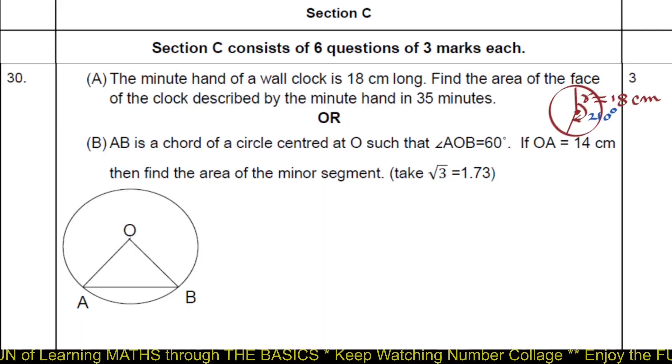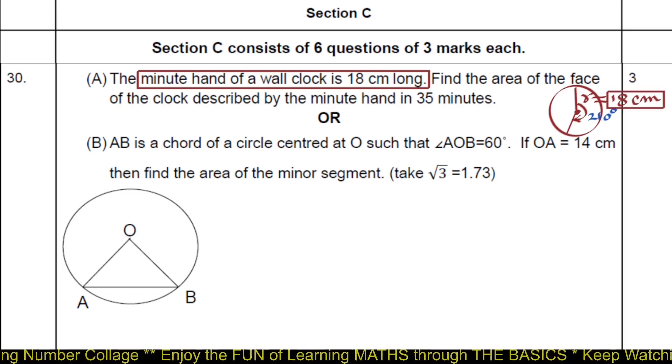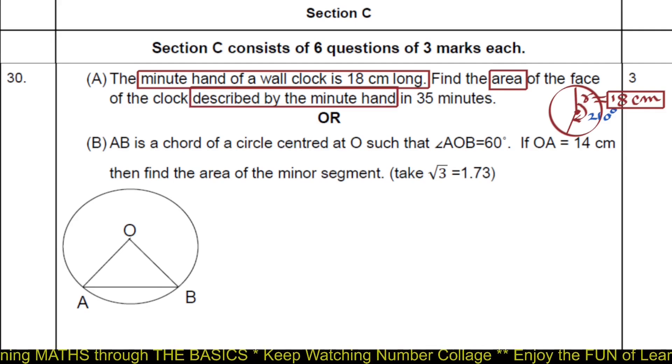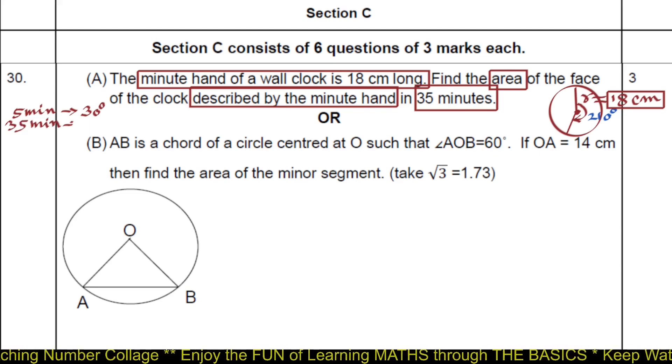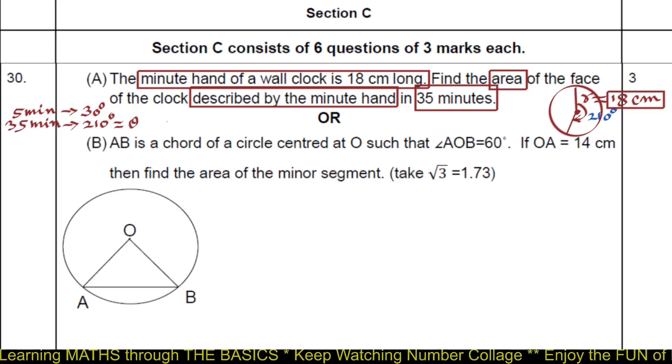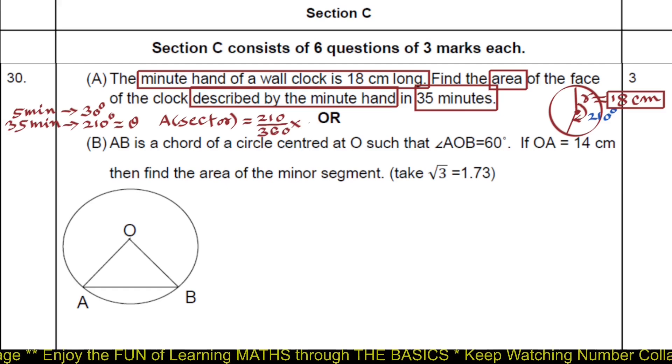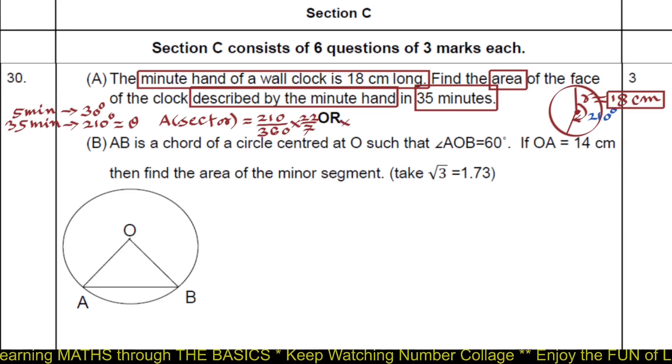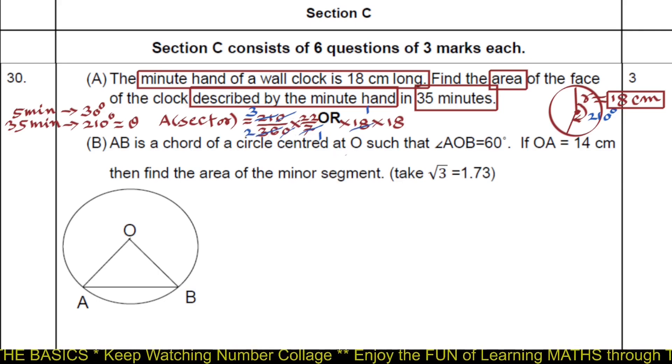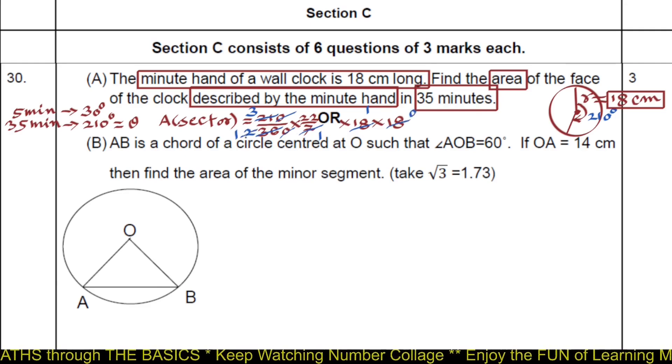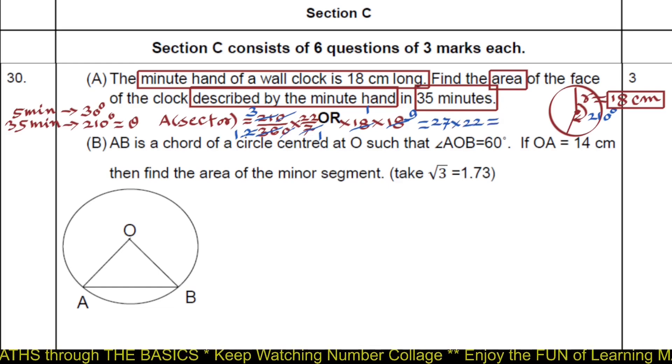Minute hand of a wall clock is 18 centimeter long, which means radius of circle is 18 centimeter. We have to find the area of the face of the clock described by the minute hand in 35 minutes. In 5 minutes, the minute hand describes 30 degrees, so in 35 minutes, it will describe 210 degrees, which we name theta. We have to find area of sector, which is theta upon 360, that is 210 upon 360 multiplied by pi r square, that is 22 upon 7 multiplied by 18 multiplied by 18. Cancelling and calculating, the area described by the minute hand in 35 minutes will be 27 multiplied by 22, which is 594 cm square.